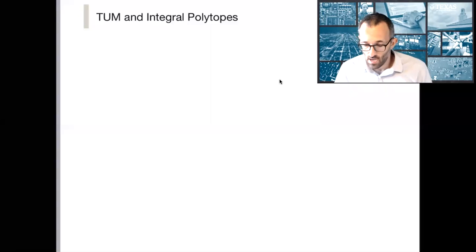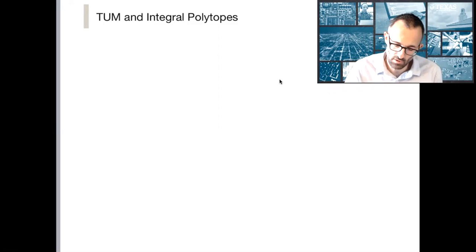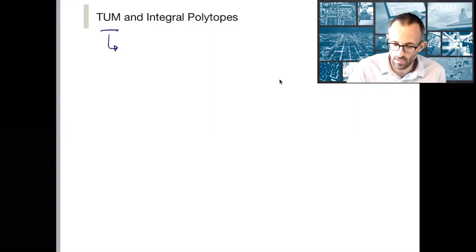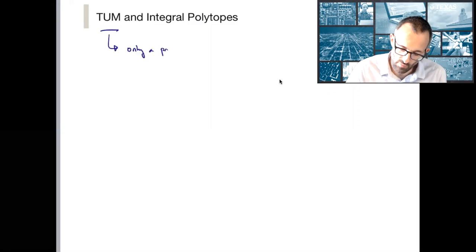We're now going to talk about a different characterization of integrality. As we've been saying, total unimodularity is focused on integrality for every possible right-hand side. So this is only a property of the matrix.